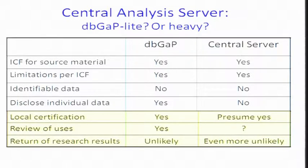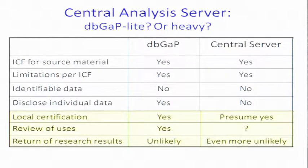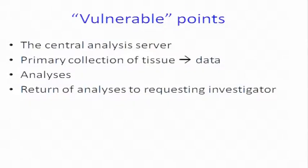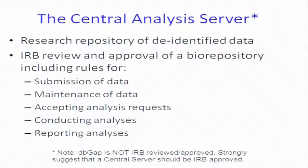We have all the DACs with dbGaP. It's not quite clear yet what system would be in place for this — would people just ask for any analysis or would there be some limitation on types of analyses? Return of research results within dbGaP is noted as being very unlikely. I think in this system it is even more unlikely, which for the LCI is very good. The vulnerable points from an ethical and oversight perspective are four: the server itself, collection of data, the analyses, and what you give back to the requesting folks.